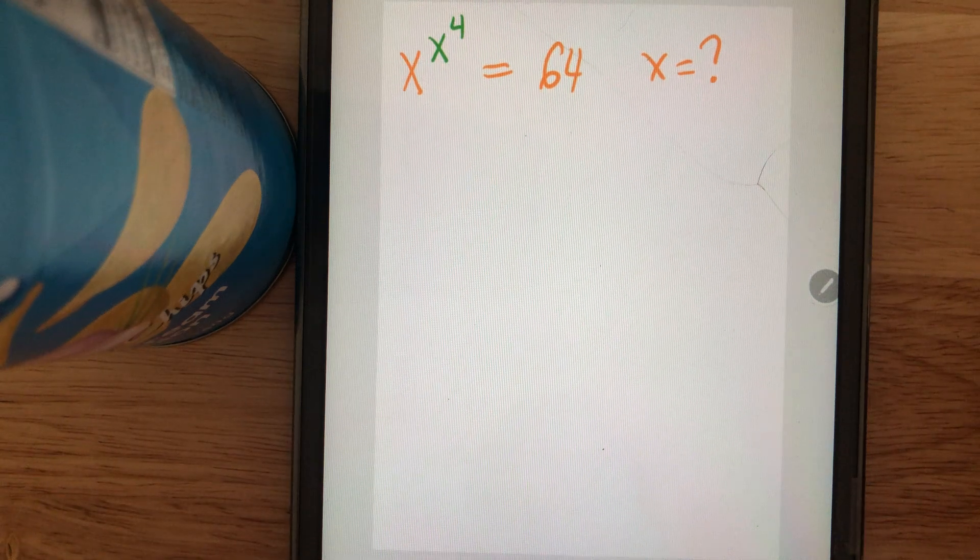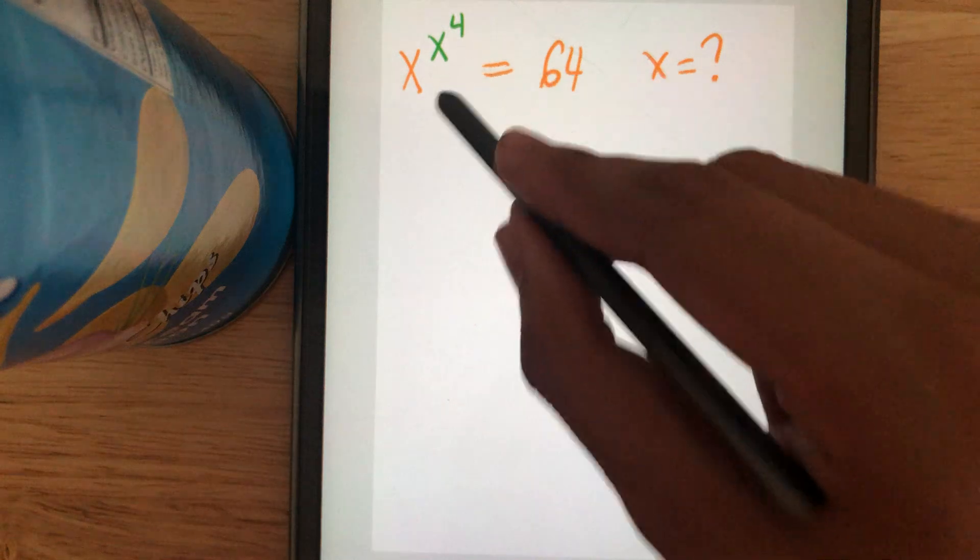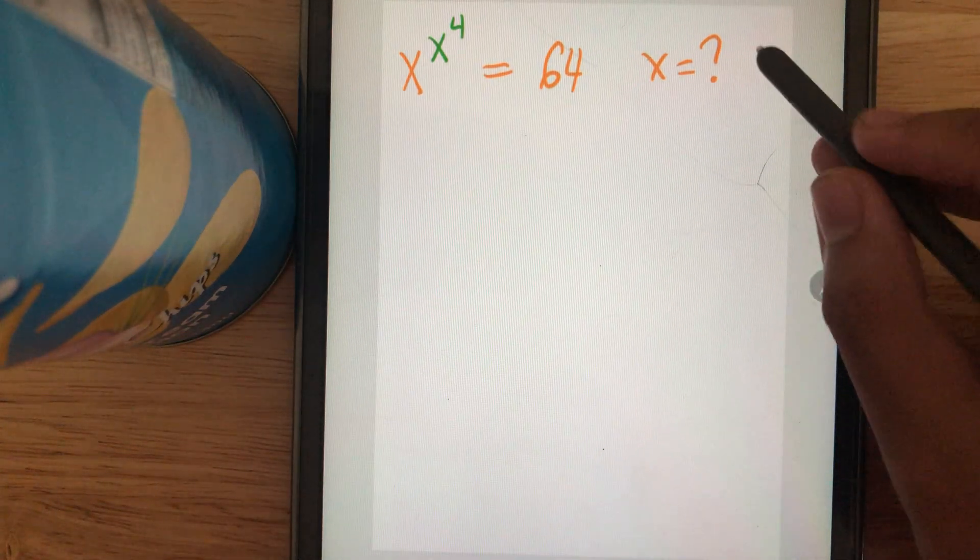In this video, we are given an equation x^(x^4) = 64 and we have to solve for x.